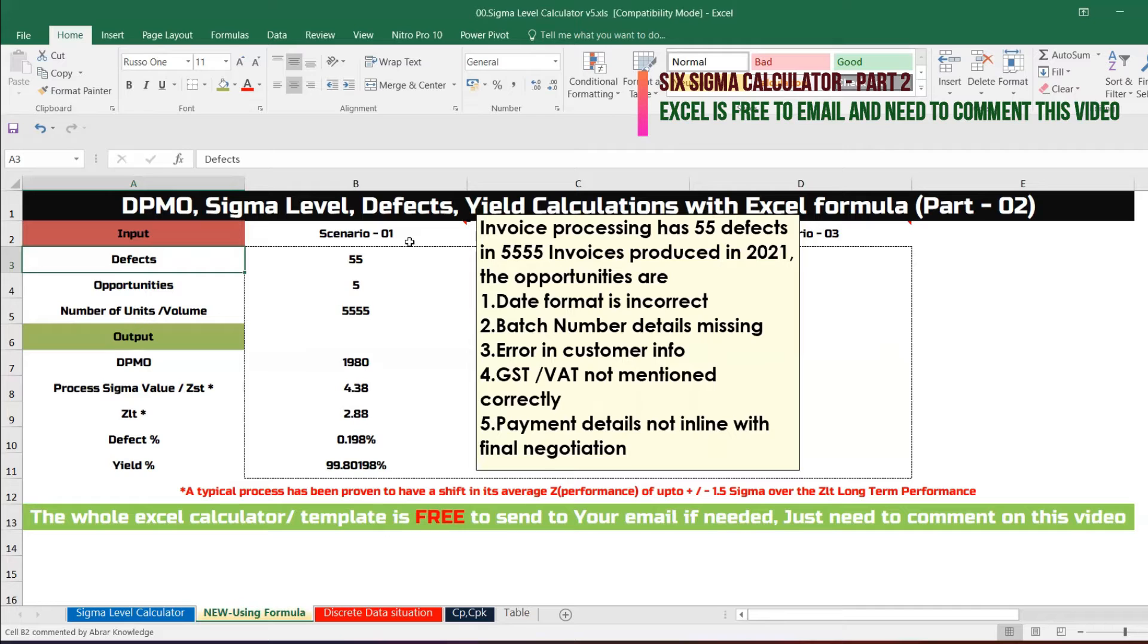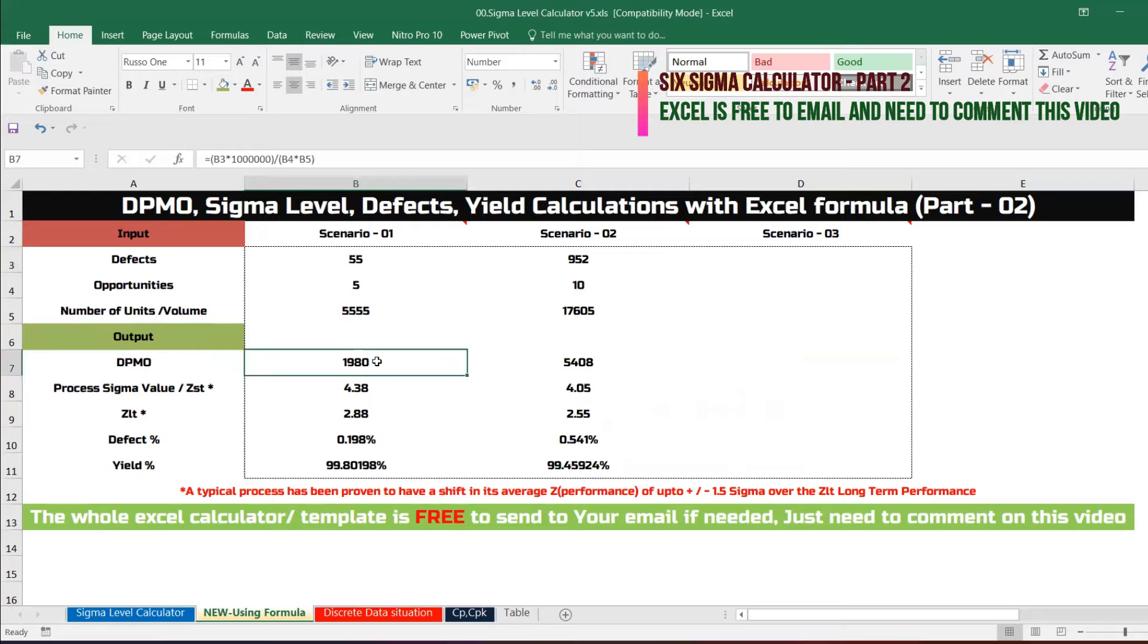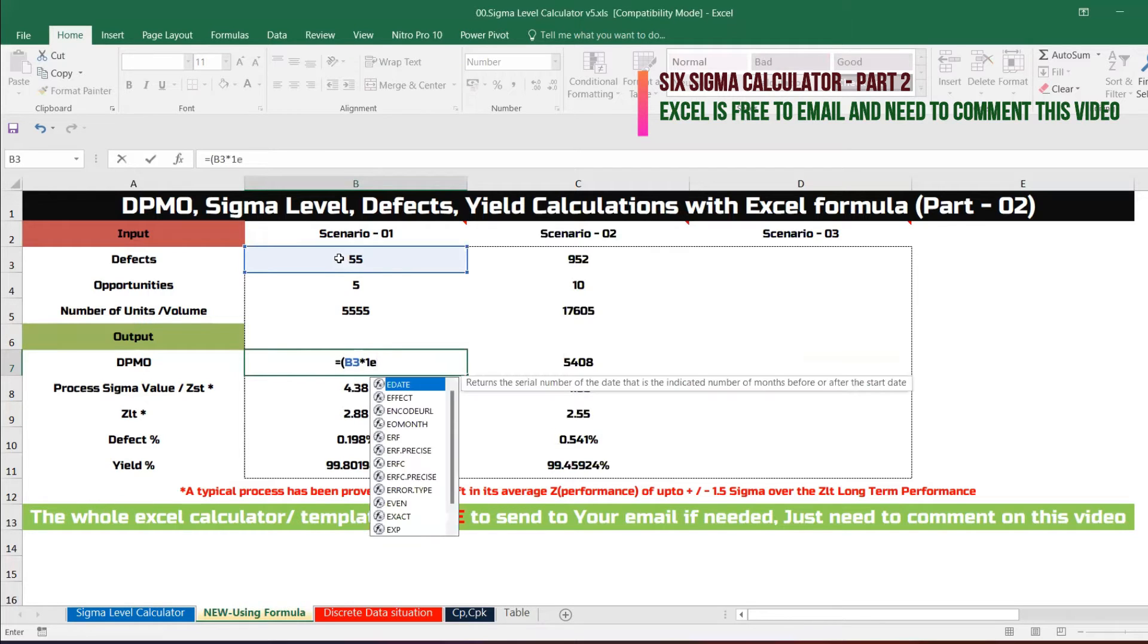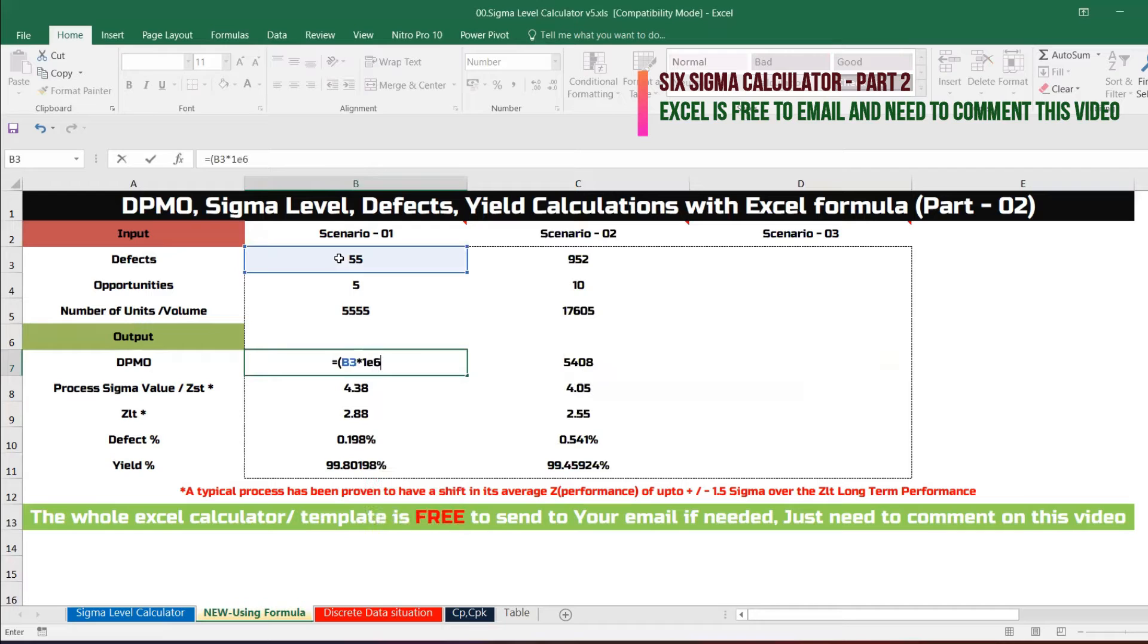The defects are 255 and the opportunities are 5, and the volume is 5555. So how to calculate this DPMO? Very simple. The formula you all know: defects times 10 to the power of 6. 10 to the power of 6 is nothing but 1 million. One easy way to do is one, you can give E and you can give 6.